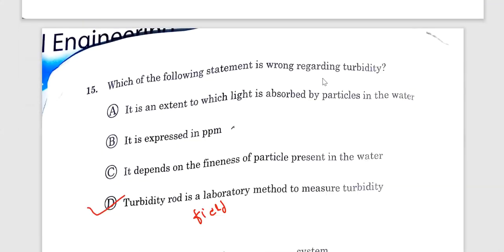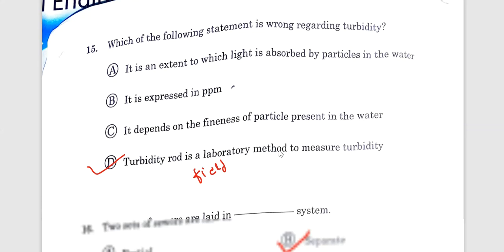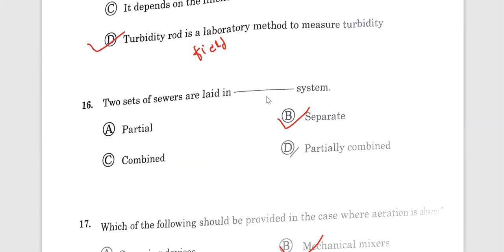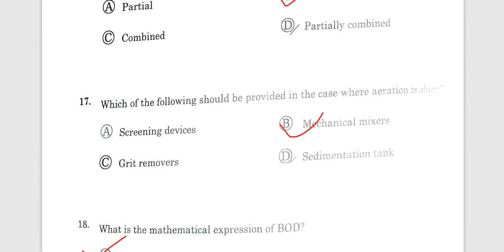Question number 15. Which of the following statement is wrong regarding turbidity? Take it aside, for some it's absolutely correct statement. Parts per million or turbidity measure, this is also correct. It depends on the fineness of the particle presence, right? Option D is correct. Turbidity rod is a laboratory method to measure turbidity. This is a wrong statement. Option D because turbidity rod is a field method, not a laboratory method.